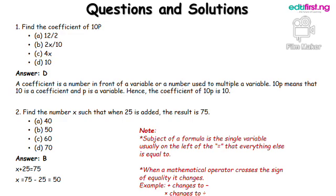Question 2: Find the number x such that when 25 is added, the result is 75. From the question, we got the following equation: x plus 25 equals 75. Making x the subject of the formula, we have x equals 75 minus 25 equals 50.